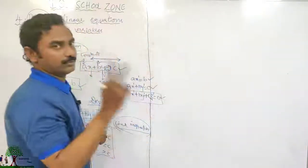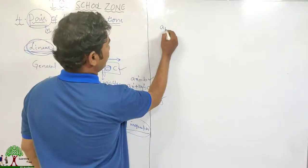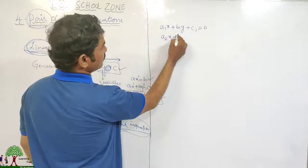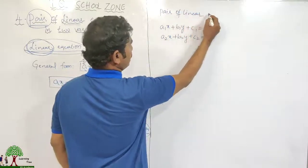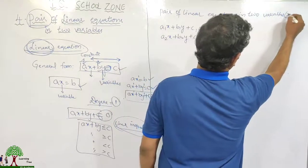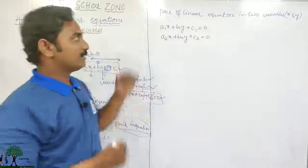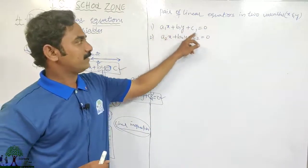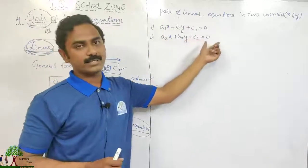Let us take two linear equations: the first is A1X plus B1Y plus C1 equals 0, and the second is A2X plus B2Y plus C2 equals 0. These are two linear equations with variables X and Y, with constants A1, B1, C1 for the first and A2, B2, C2 for the second.